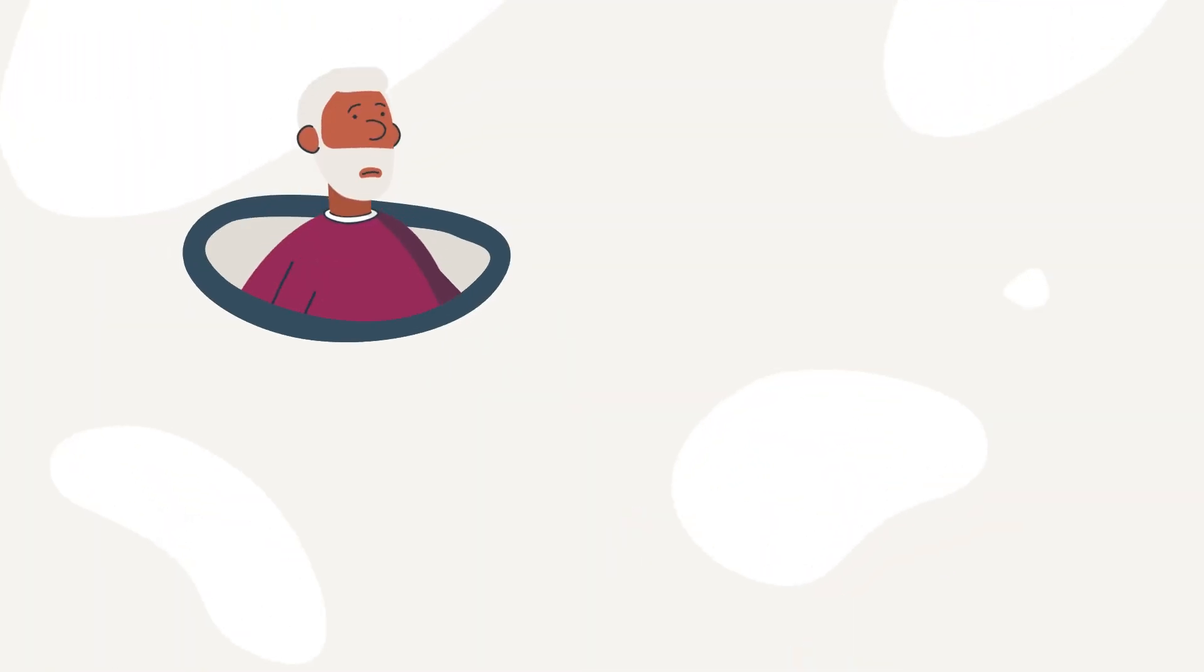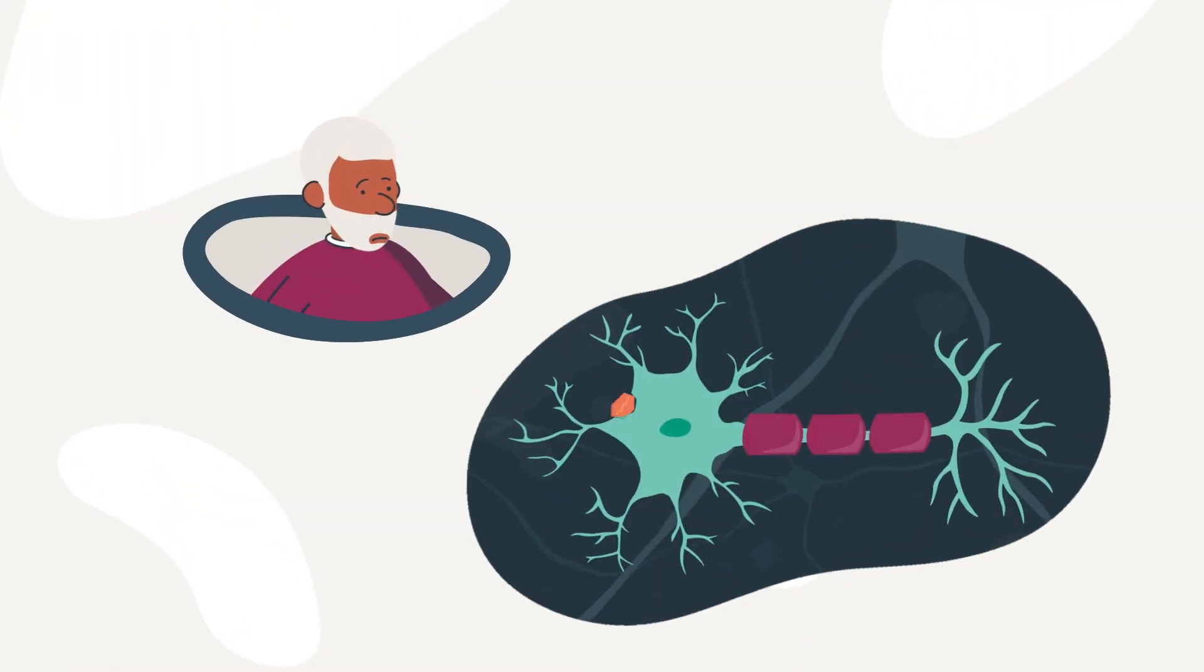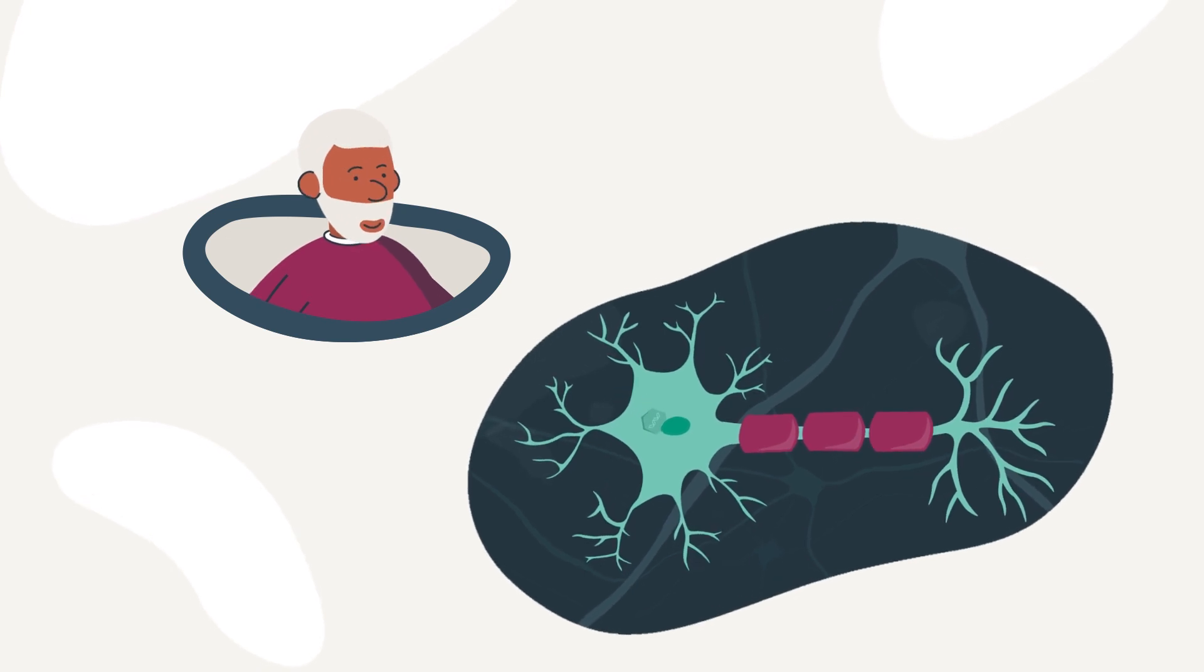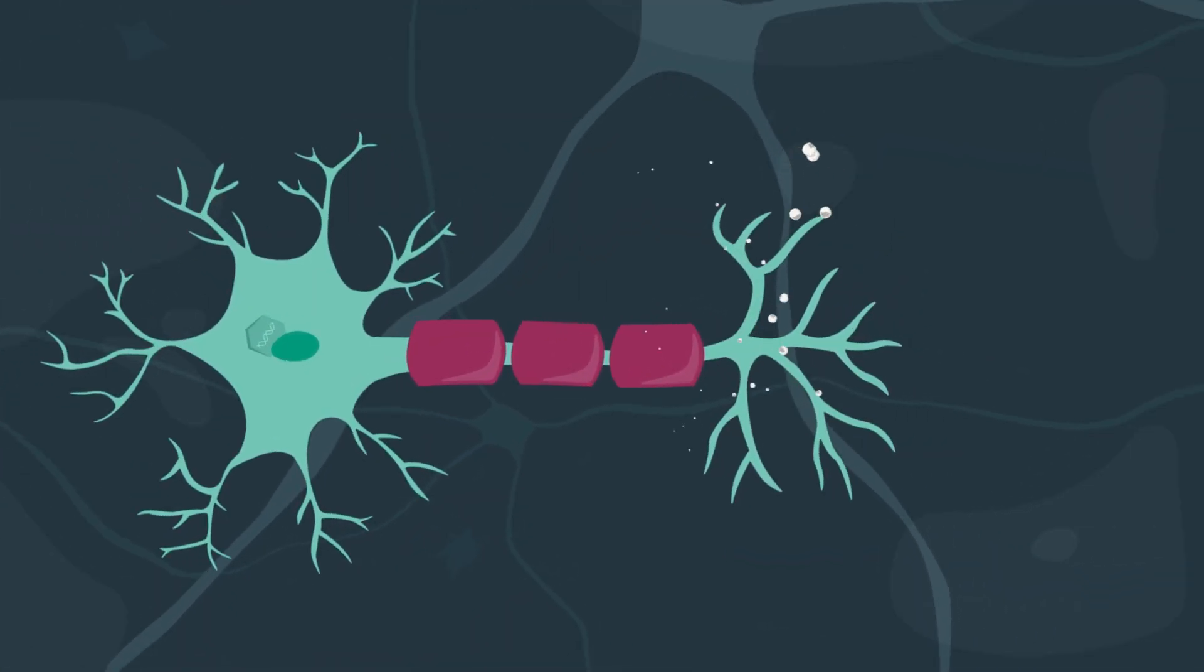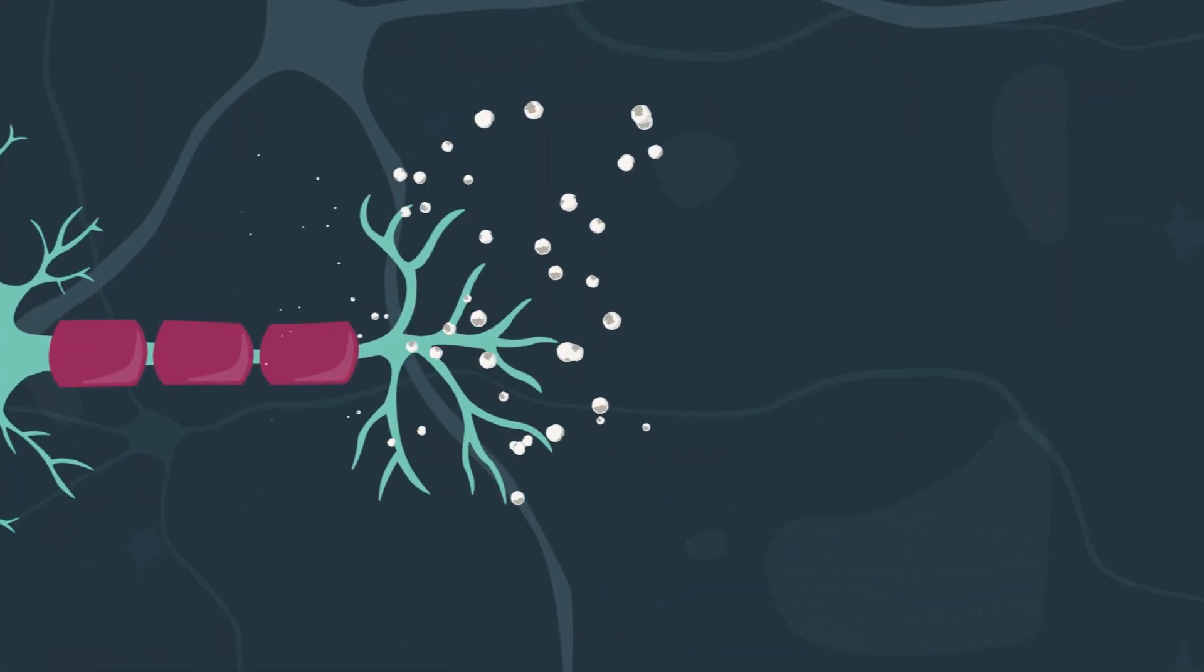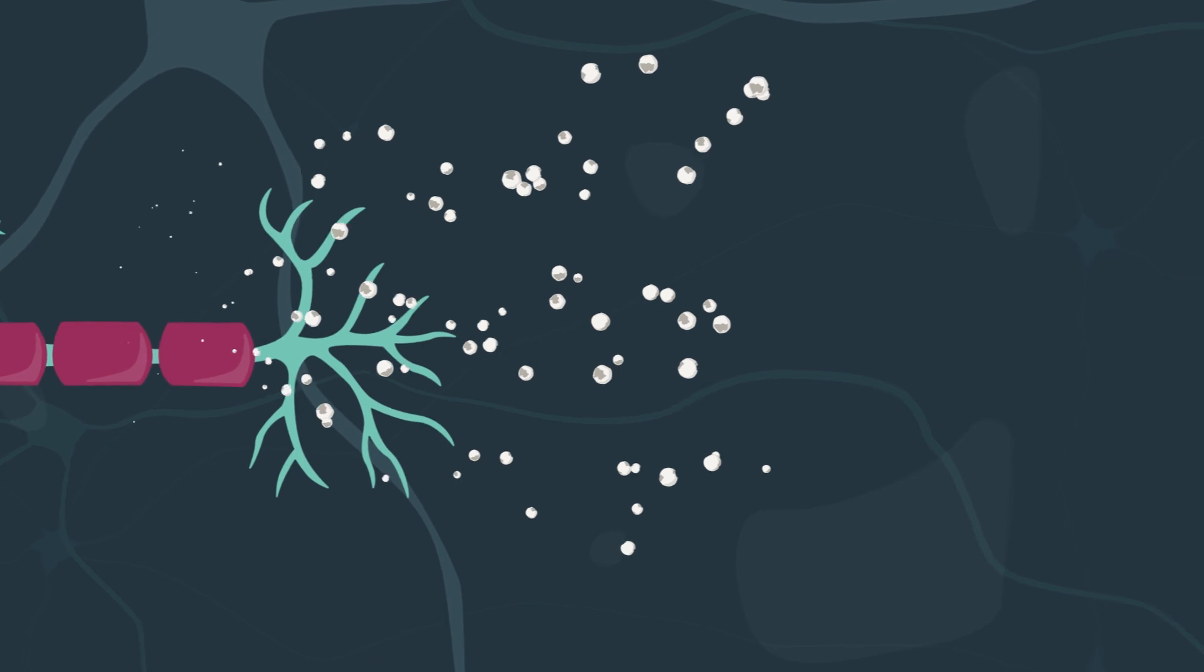A one-time surgical procedure may deliver either vectors carrying the gene for AADC or vectors carrying the gene with three dopamine-producing enzymes into the brain. Once the new genes are in the cells, they give instructions to produce the enzymes.